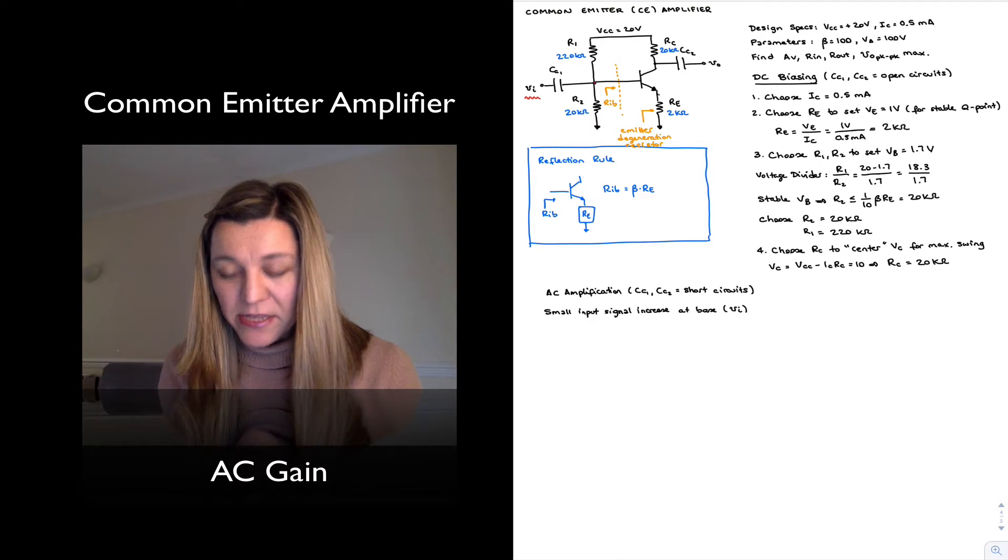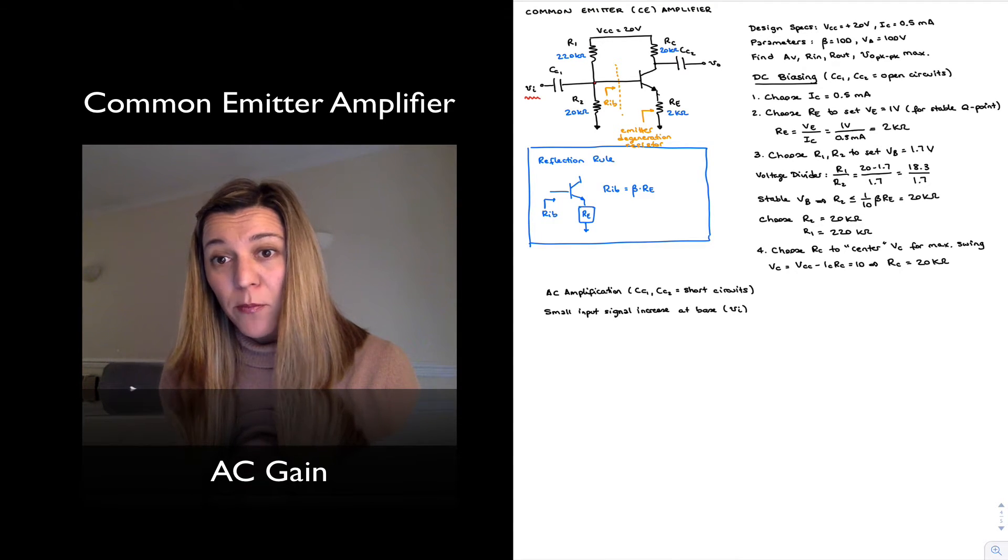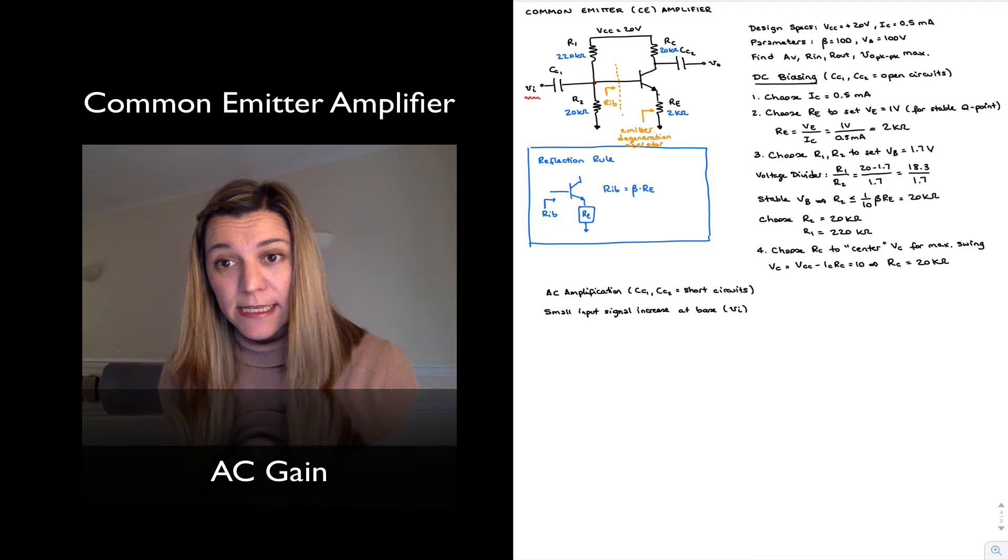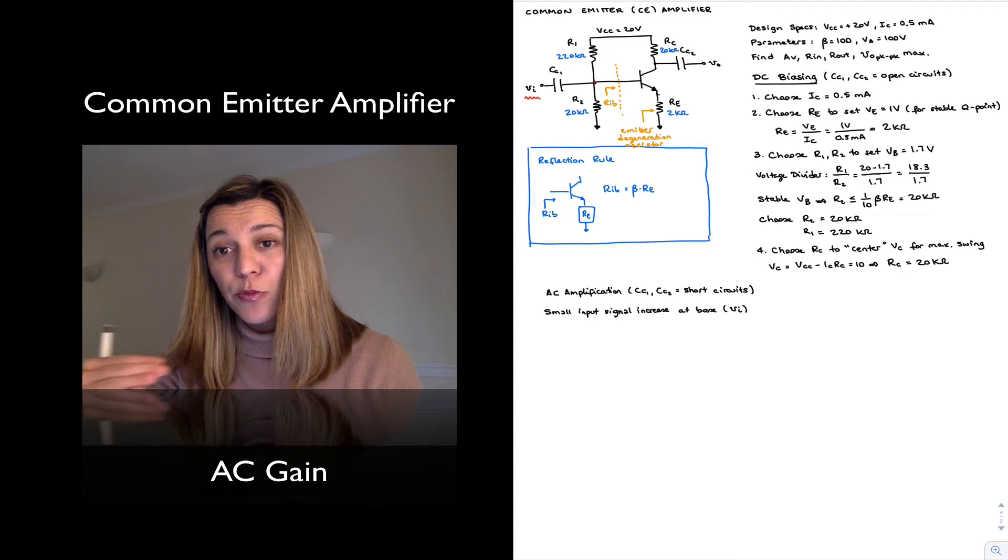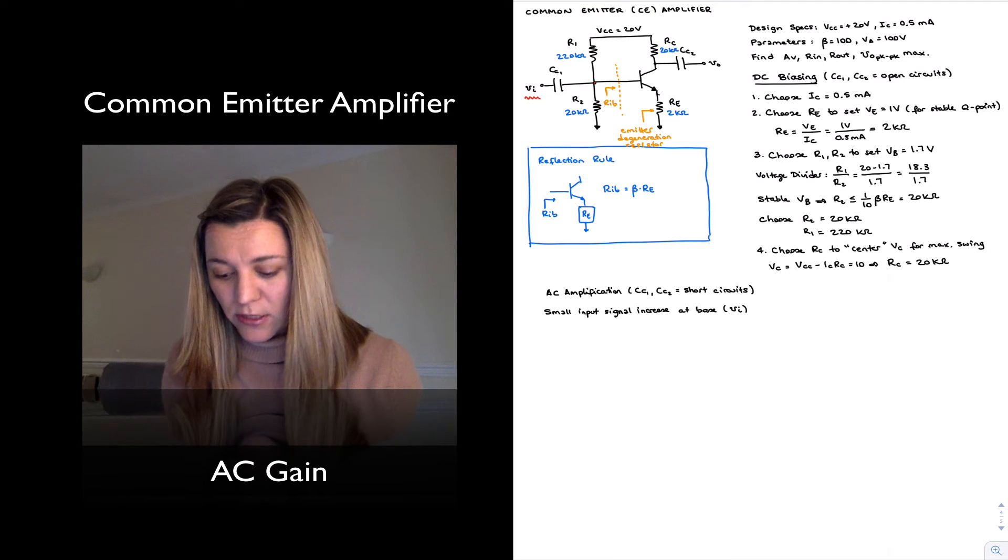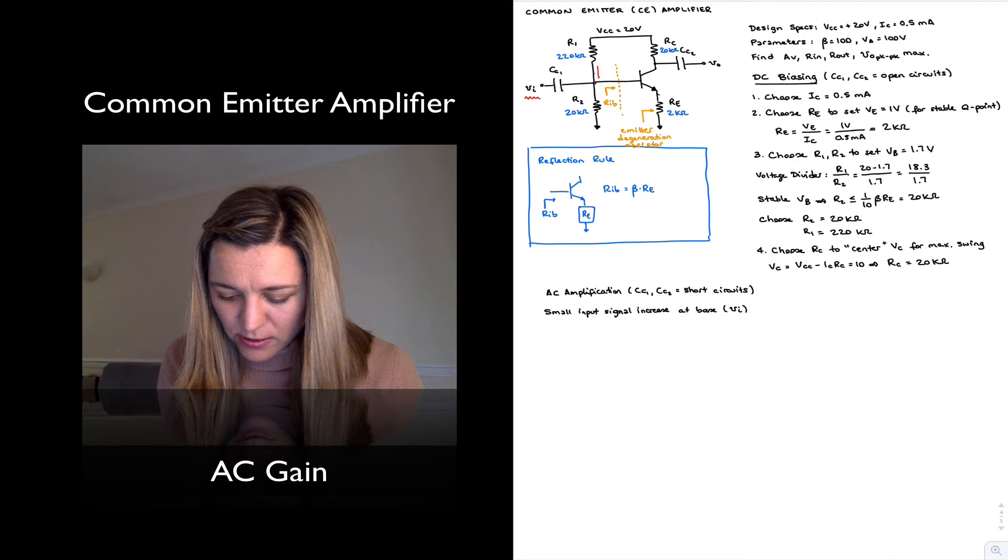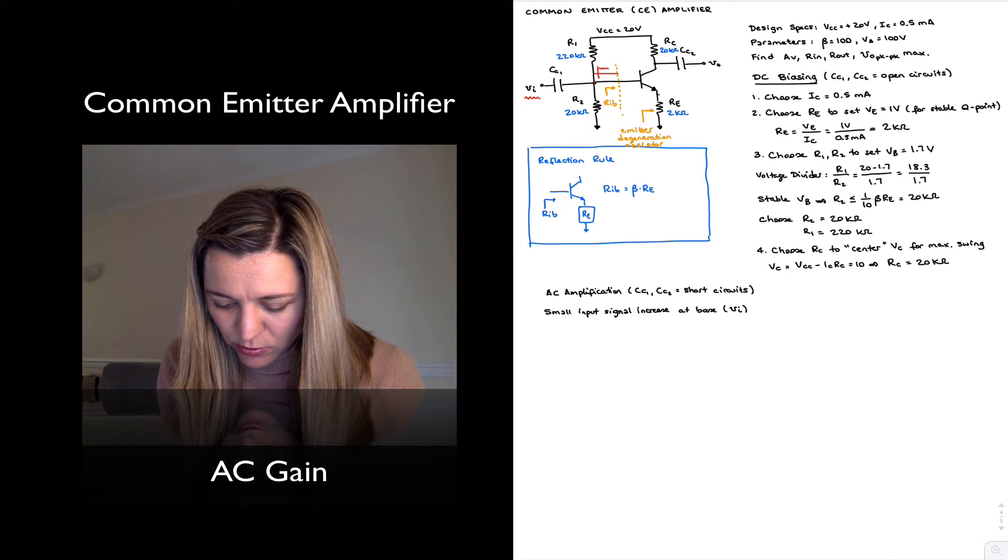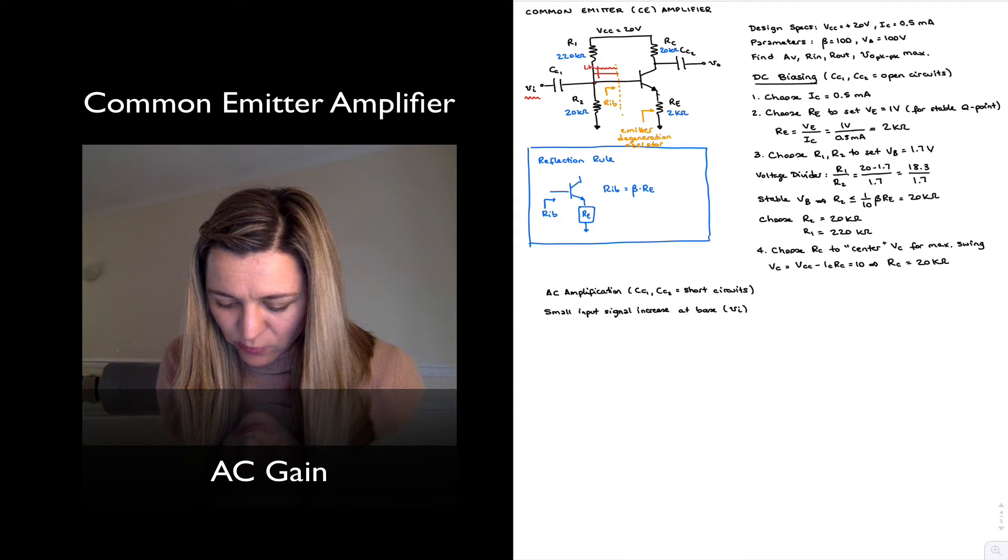And so the DC point at the base is still sitting at 1.7 volts DC, but now it has this small AC signal superimposed over that offset voltage. And so what we will see is the voltage here will be that small wiggle centered at 1.7 volts.